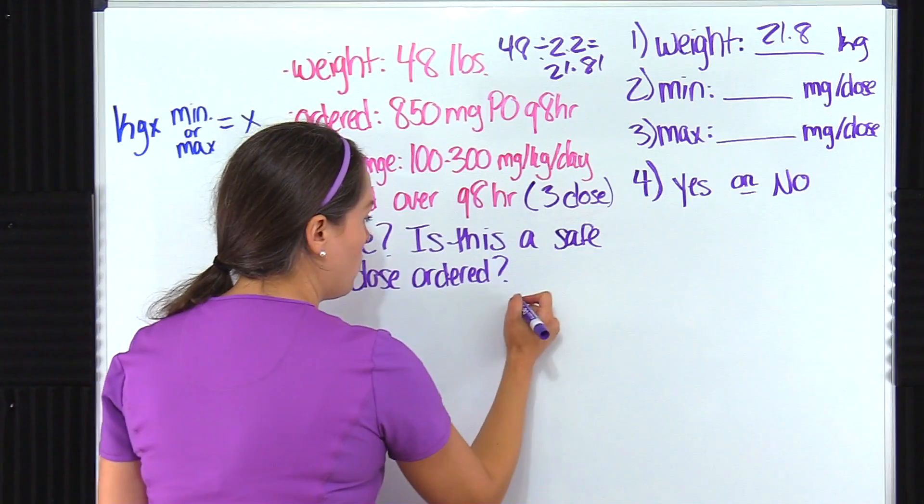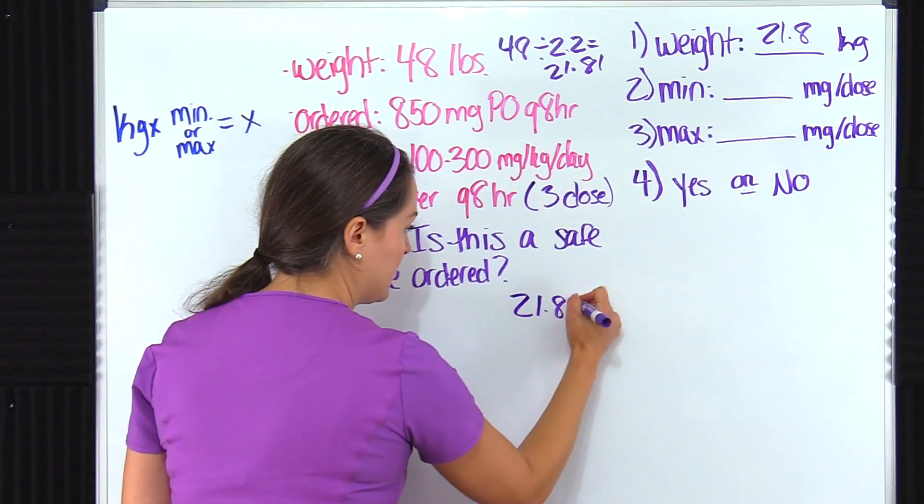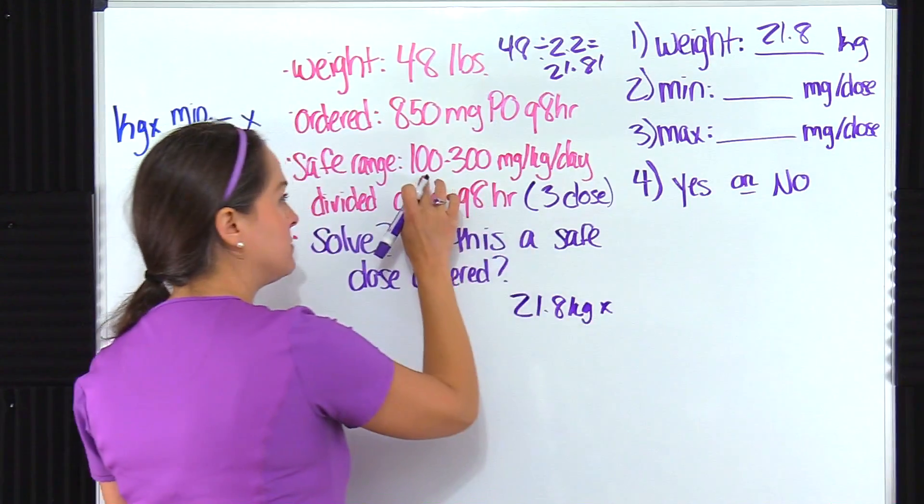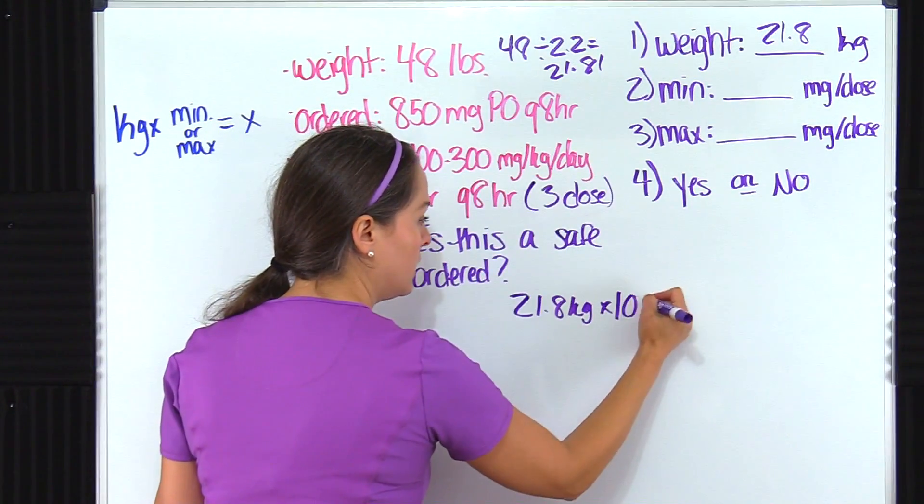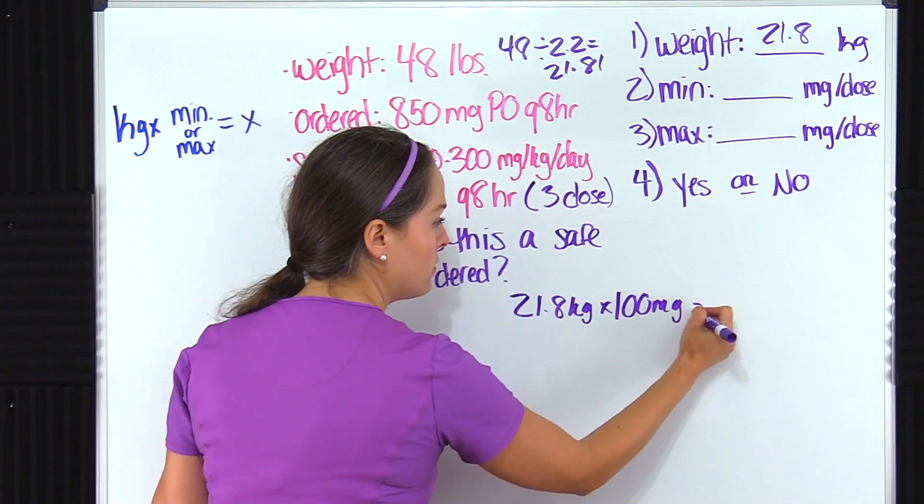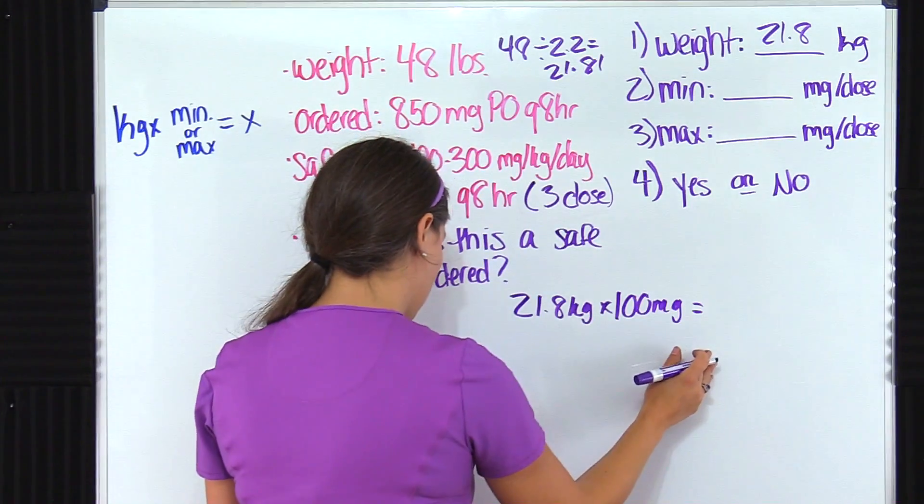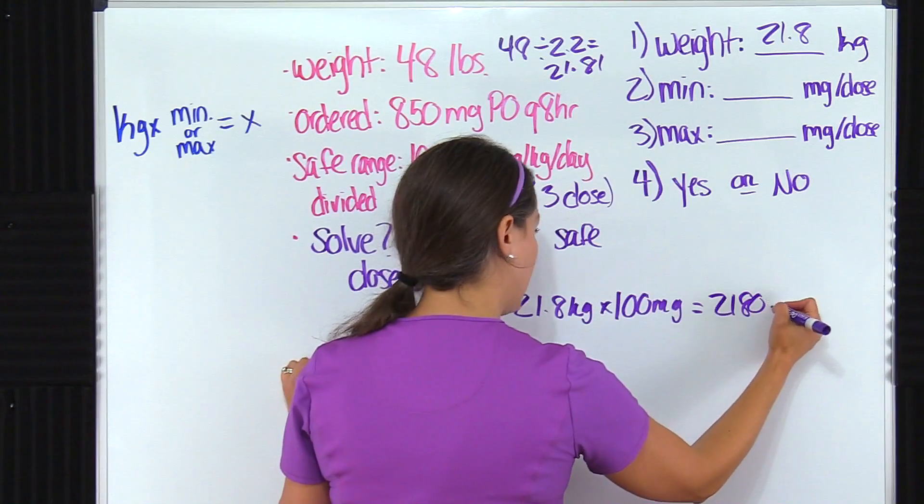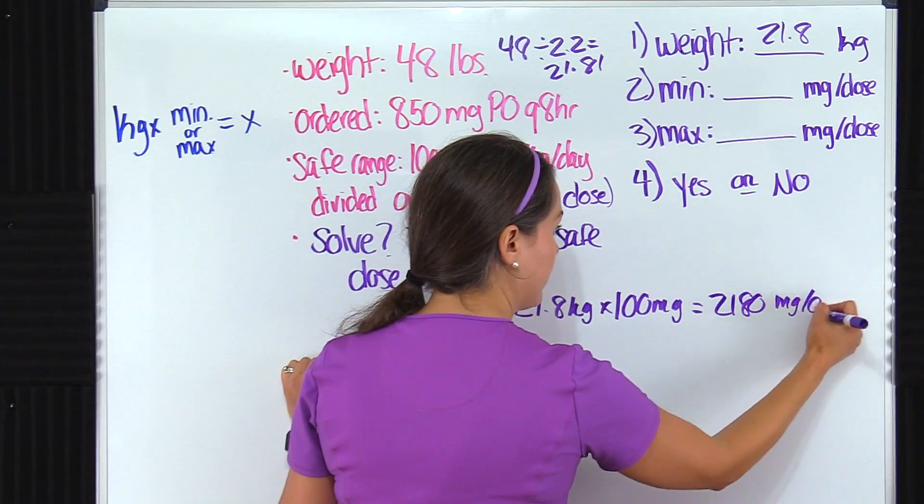Patient's weight is 21.8 kilograms. I'm going to multiply that first by the minimum dose, which is 100 milligrams. So when we multiply that out, we get 2180 milligrams per day.